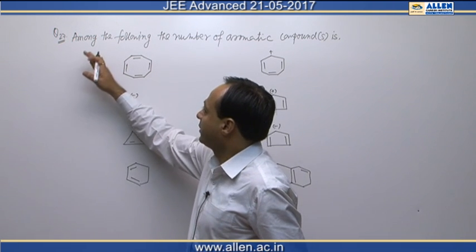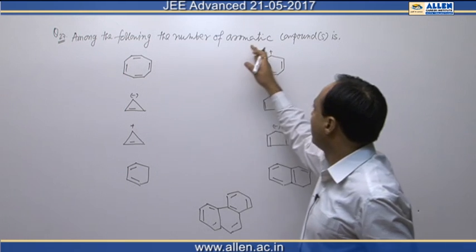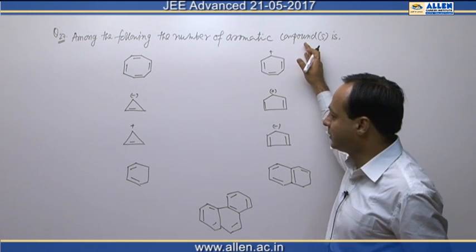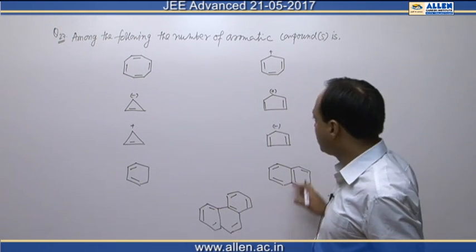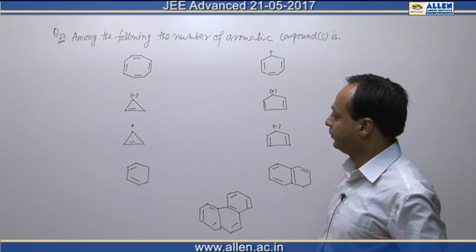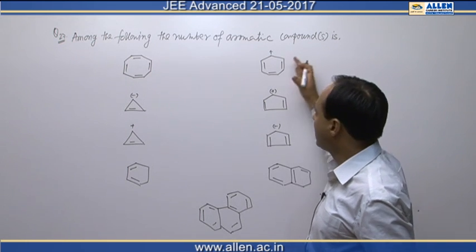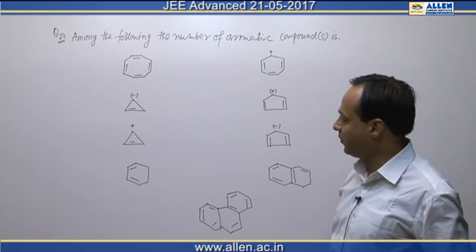Question number 27: given among the following, the number of aromatic compounds. There are 9 species given, and out of these, how many are aromatic compounds — that is the question.